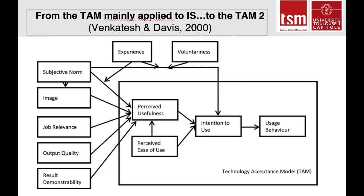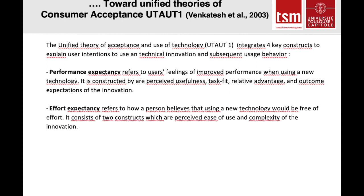In summary, subjective norms and image, as well as innovation-related factors of job relevance, output quality, and result demonstrability, positively influence perceived usefulness. The traditional perceived ease of use also positively influences perceived usefulness. Experience and voluntariness act as moderators influencing the link from input variables to intention to use. TAM and TAM 2 are not ideally suited to explain adoption of hedonic systems, for example online games, music, virtual worlds, online shopping, learning, education, online dating, digital music, social networking, or gamification.